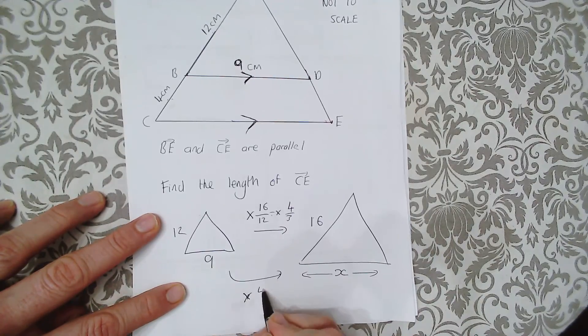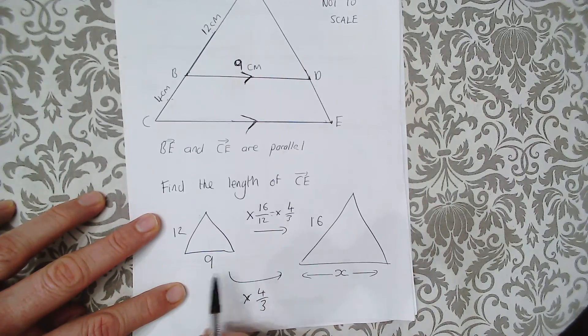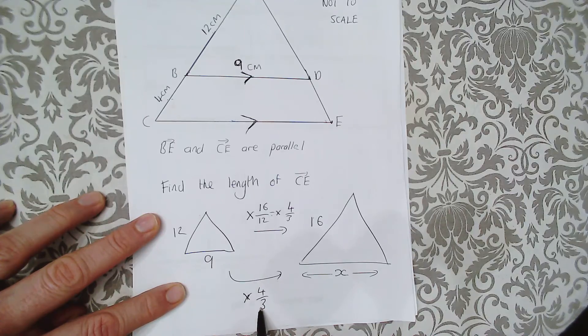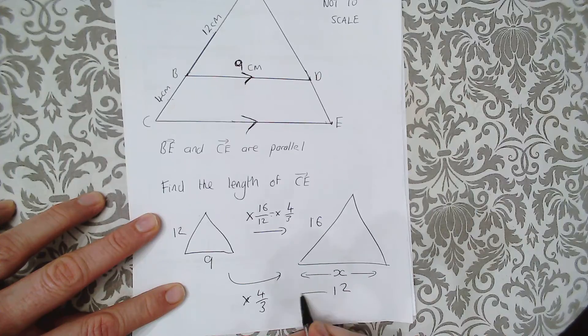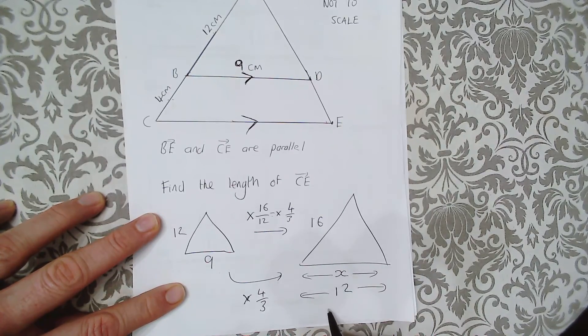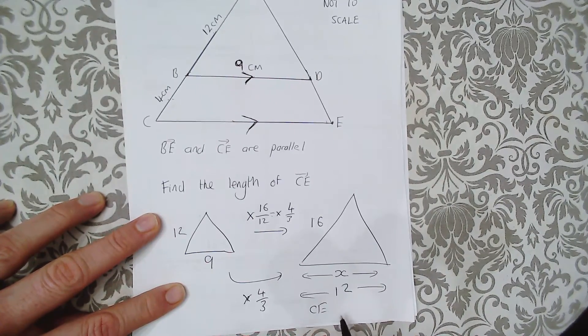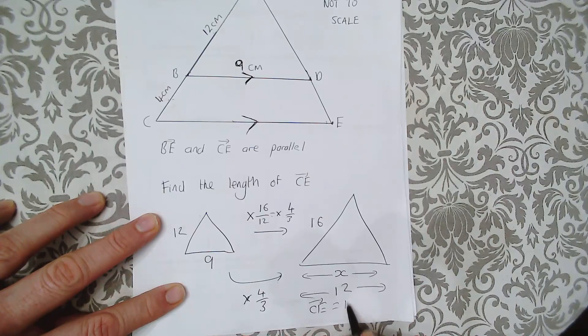gives me 9 divided by 3, which is 3, times 4, which is 12. So actually this X is 12, or CE equals 12.